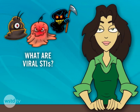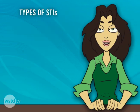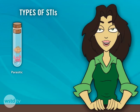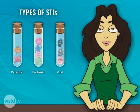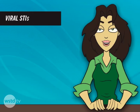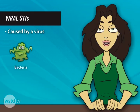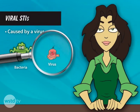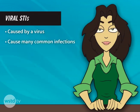A bit of background. There are three types of infection you can get from sexual activity: parasitic, bacterial, and viral. A viral STI is a sexually transmitted infection that is caused by a virus. You may know that bacteria are microscopic single-cell organisms — they are really small. Viruses are even smaller, about a hundred times smaller than bacteria. They cause many common human infections, such as the common cold and chickenpox.